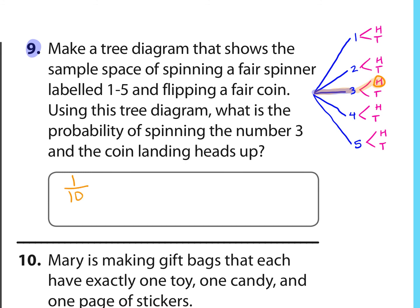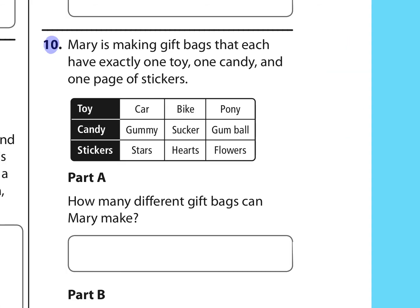Number 10, Mary's making gift bags that each have exactly one toy, one candy, and one page of stickers. How many different gift bags can Mary make? Well, there's three different toy options, three different candy options, and three different sticker options. So we're going to just multiply 3 times 3 times 3, which is 27 different gift bags.